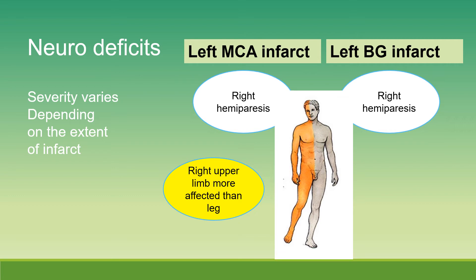Right hemiparesis is present in both types of stroke, but in left MCA infarct, the right upper limb is usually more affected than the leg.